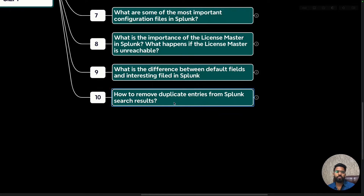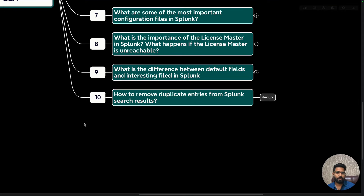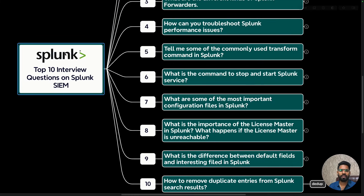Question ten: how do you remove duplicate entries from Splunk search results? You can use the dedup command — a search command that removes duplicate events based on specific fields or all fields. In your search query, you pipe it with dedup followed by the field name — for example, 'dedup src_ip' to remove duplicate source IP entries, or specify multiple fields separated by commas to deduplicate across both source and destination IP addresses.